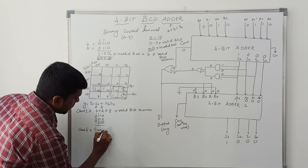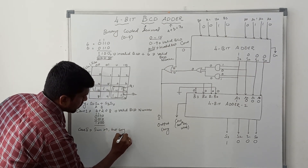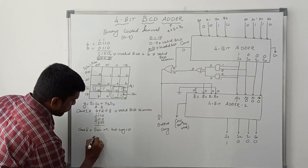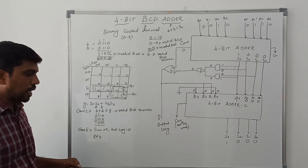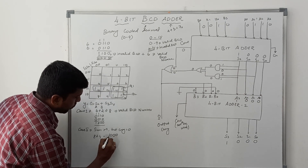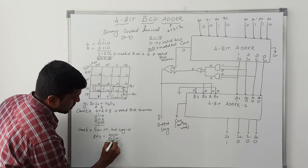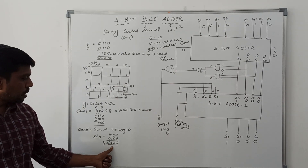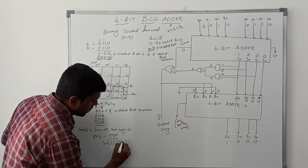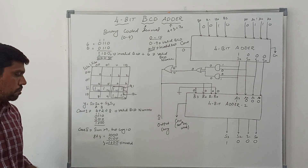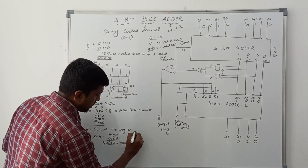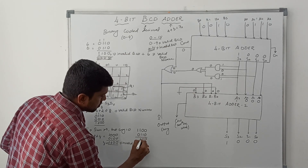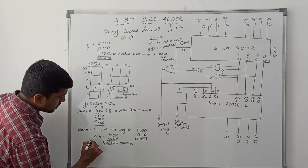Case 2: the sum is greater than 9 but carry equals 0. For example, 8 plus 4. Binary for 8 is 1000, binary for 4 is 0100. Adding: 0+0=0, 0+0=0, 0+1=1, 1+0=1; sum is 1100 (decimal 12), carry is 0. The sum is greater than 9 but carry is 0, so it is an invalid BCD number. To correct it, add 6: 1100 + 0110, which gives result 12 and carry 1.